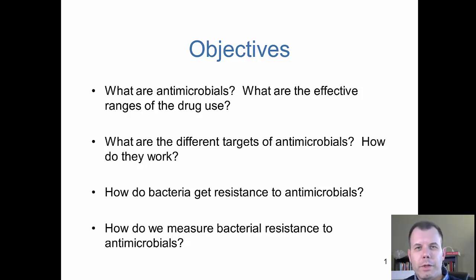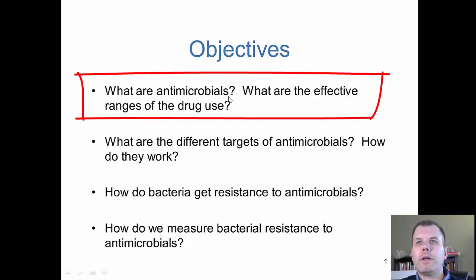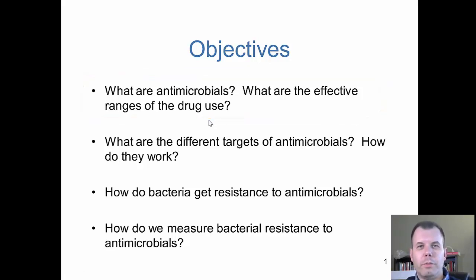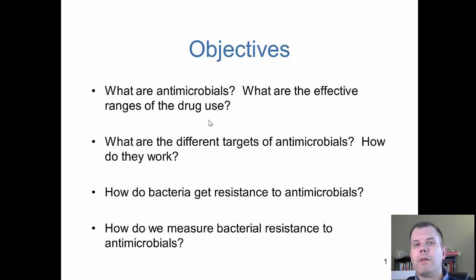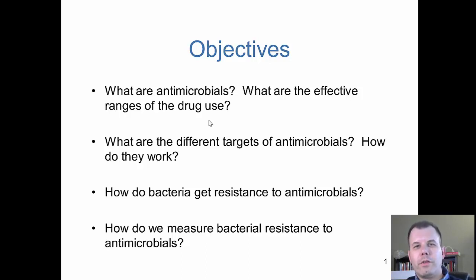So let's take a look at what we're going to be covering today, then go through some of the history of antimicrobials, and talk specifically about what each one is. First we're going to look at what antimicrobials are and what the effective ranges of drug use are - talking about narrow spectrum versus broad spectrum. Narrow spectrum means you only affect a certain amount of bacteria or bugs, maybe only E. coli or only the gram negatives, where broad spectrum is going to cover a large number of bacteria - both gram positive and gram negative.